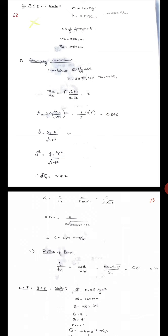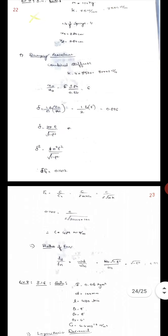To find zeta: delta equals 2 pi zeta by square root of 1 minus zeta square. Squaring both sides, delta square equals 4 pi square zeta square upon 1 minus zeta square. Simplifying, we get zeta equals 0.1412.